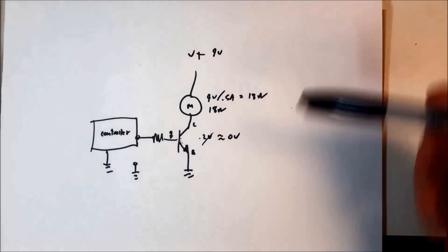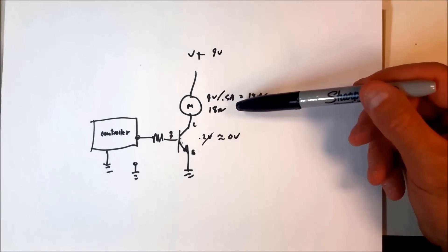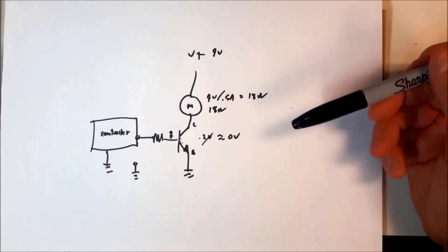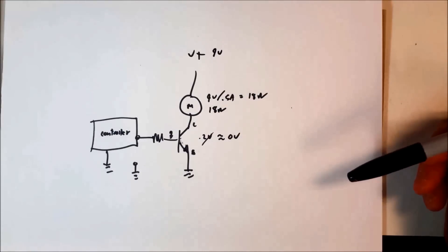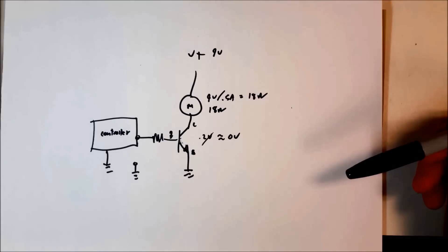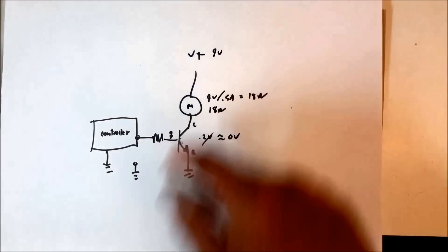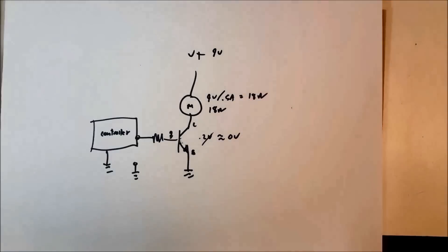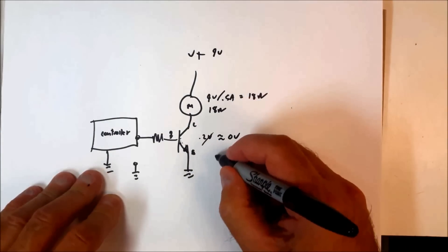So if we have 9 volts at half an amp through our motor, which is 18 ohms of resistance, the transistor will have no voltage across it — all the voltage will be across the load. So the transistor will be saturated, and this is going to occur when we have 0.5 amps.